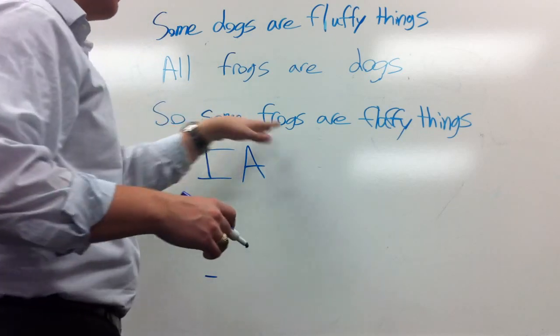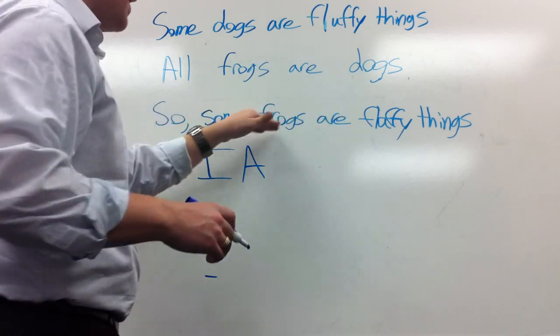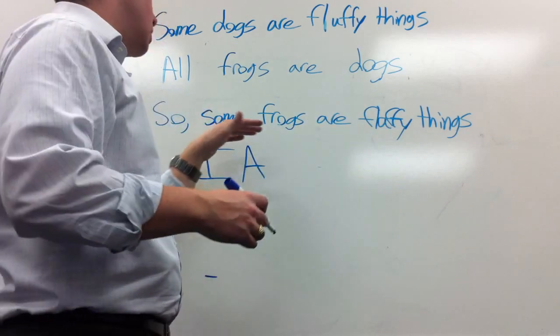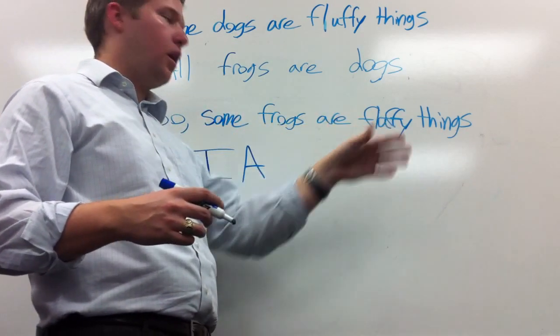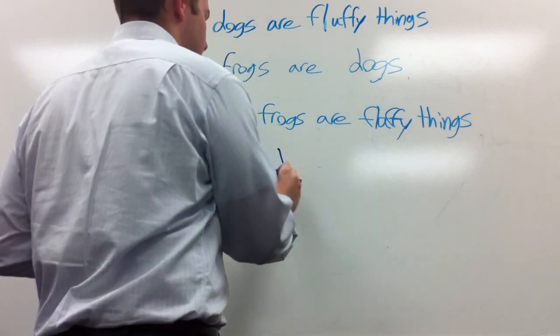So finally, the conclusion, some frogs are fluffy things. Some s are p. Some blank are blank. Some chihuahuas are dogs, whatever you have. Anything that you put in that form is going to be i.